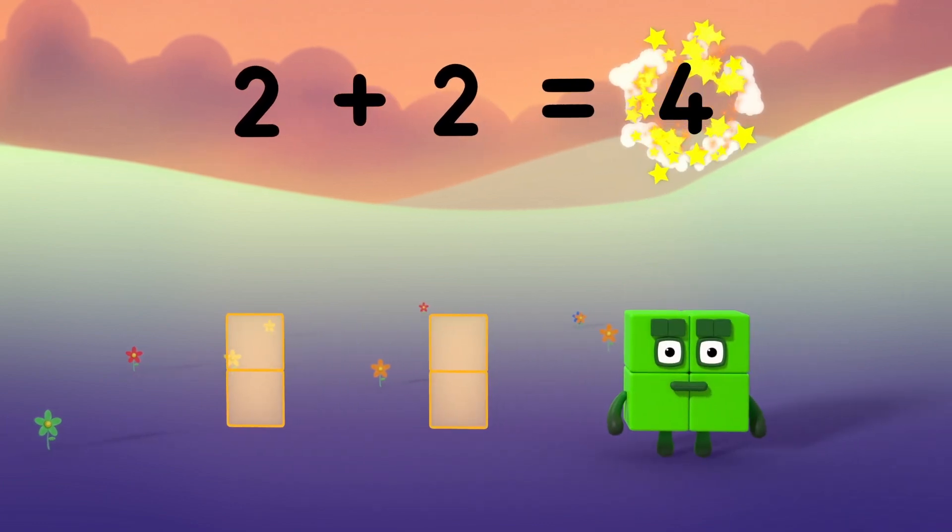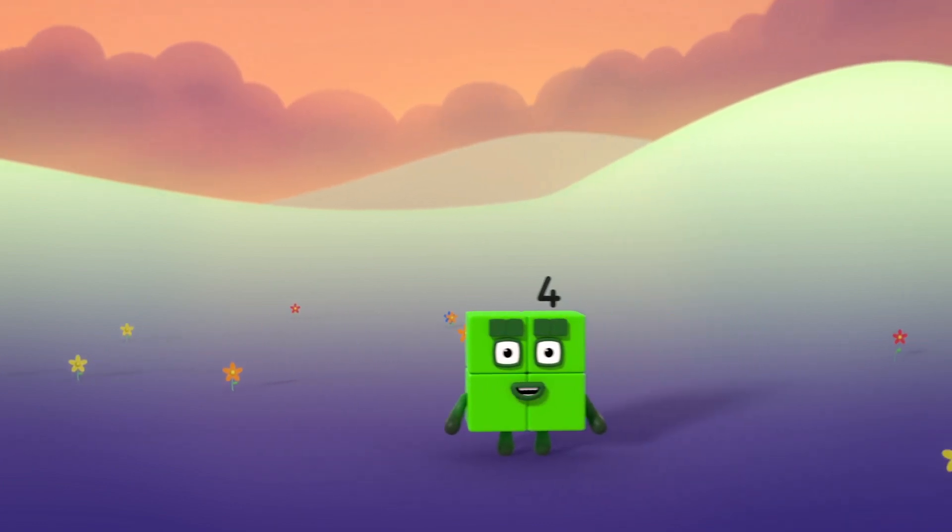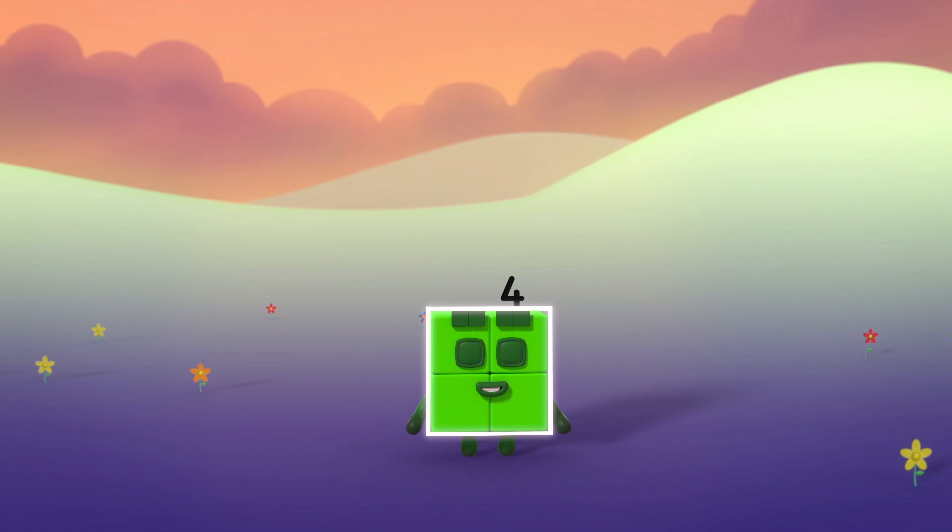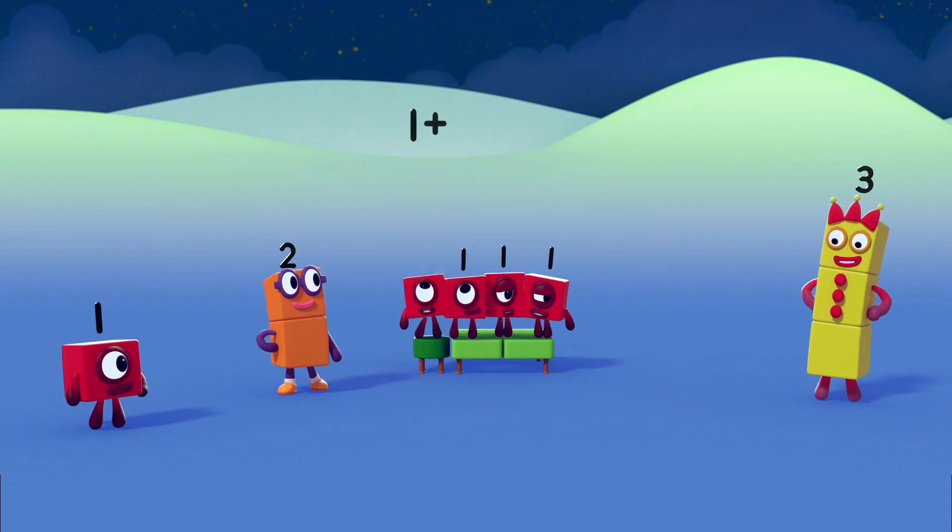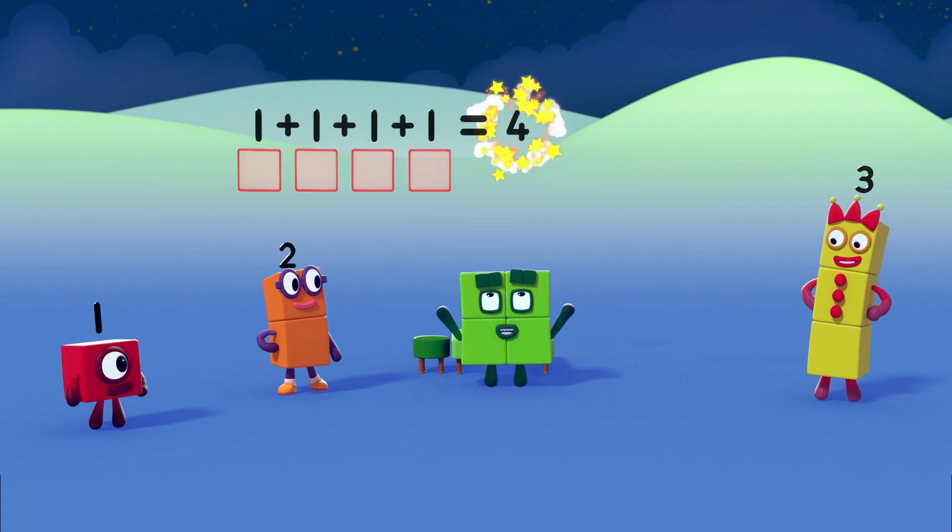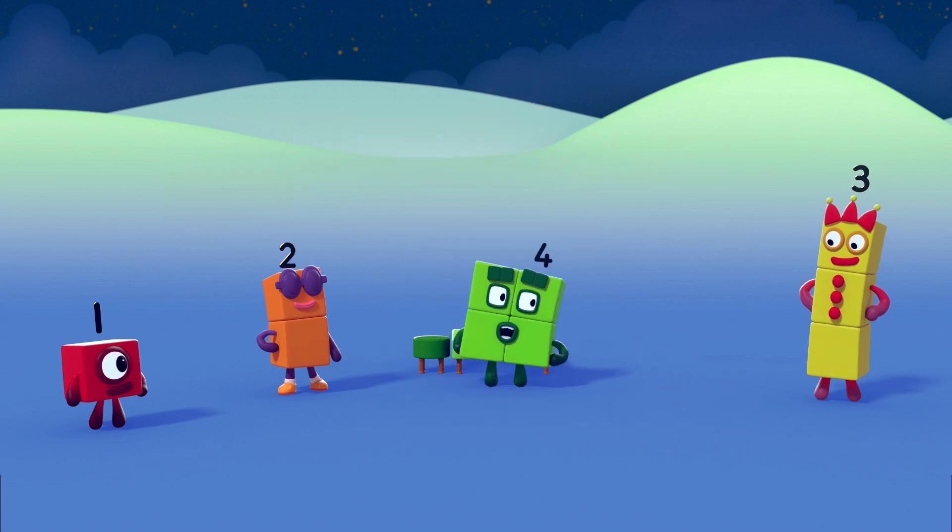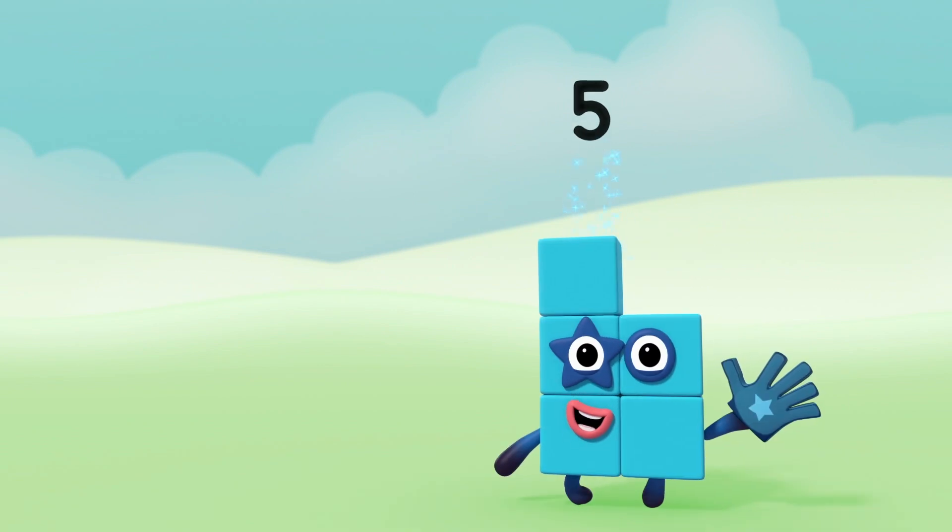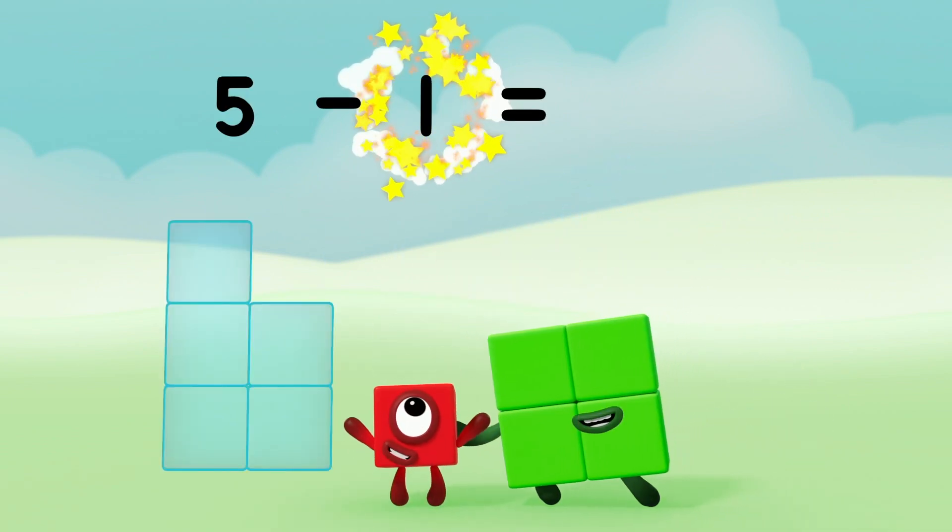And the whole of me is four. I'm a square, look! Four sides, four corners. One plus one plus one plus one equals four. Four is four ones. Five minus one equals four.